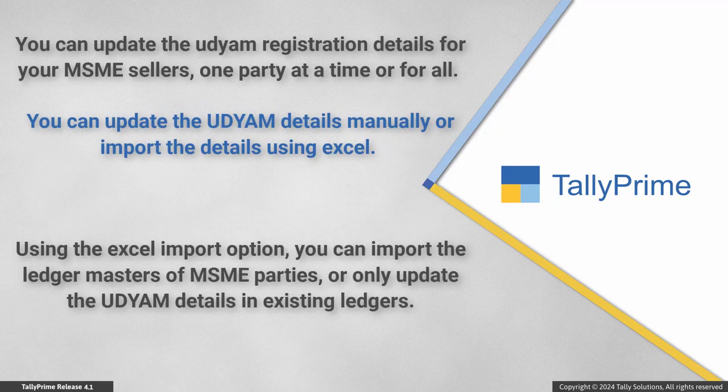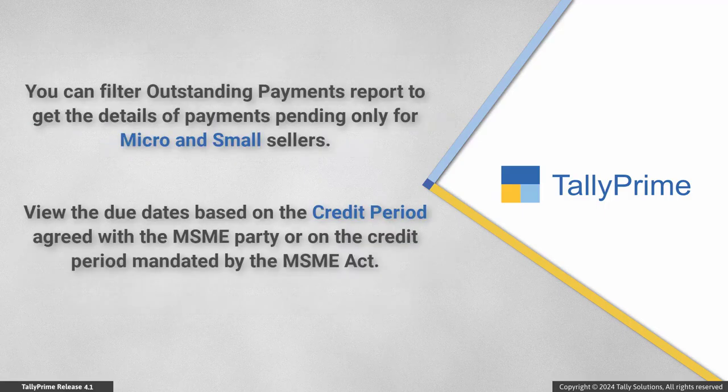You can update the Udyam registration details for your MSME sellers, one party at a time or for all. You can update the Udyam details manually or import the details using Excel. Using the Excel Import option, you can import the ledger masters of MSME parties or only update the Udyam details in existing ledgers.